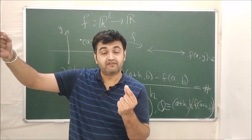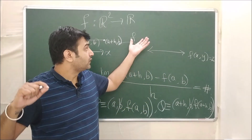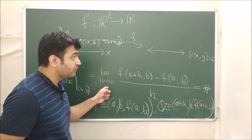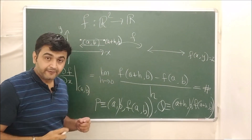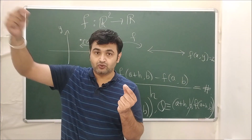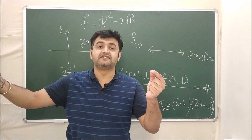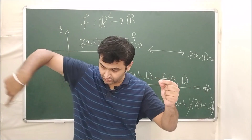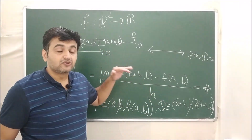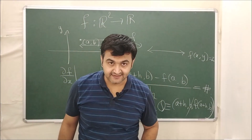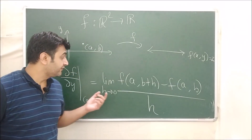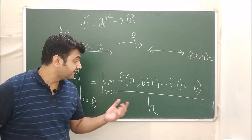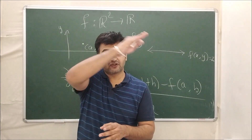As h goes to zero, (a+h, b) approaches (a, b). The point Q approaches P, and the secant line becomes a tangent line. The limit is therefore the slope of this tangent line — the tangent line which is along the x-axis, because there is an increment in x and y is kept fixed. Similarly, the partial derivative with respect to y gives the slope of the tangent line along the y-axis.